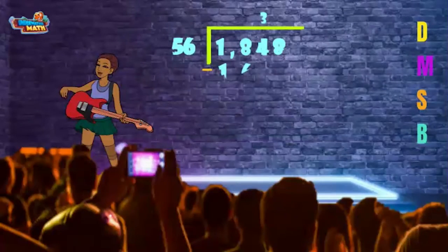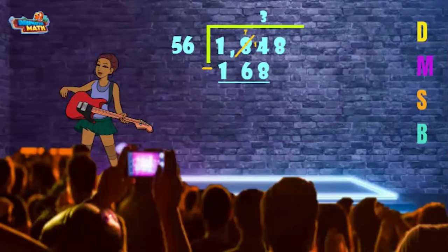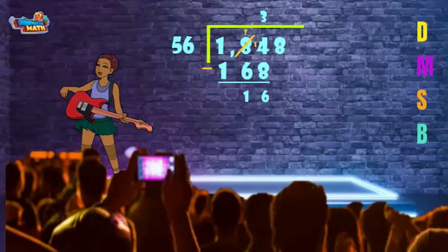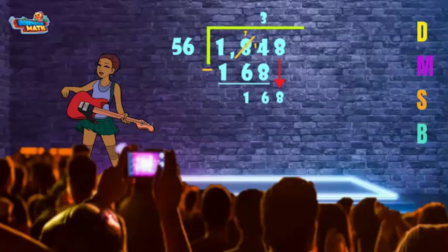56 times 3 equals 168. So we have done divide and multiply, so now it's time to subtract. 184 minus 168 equals 16. Now it's time to bring it down — 16 turns into 168.